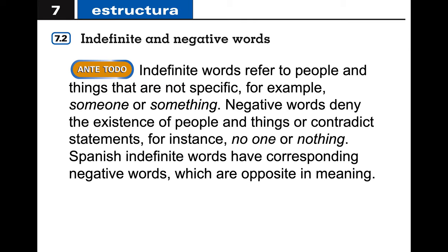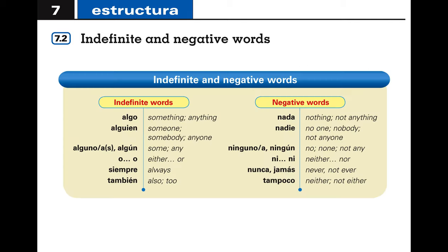Spanish indefinite words have corresponding negative words with opposite meanings. So for indefinite words like 'something,' 'someone,' 'some,' 'either,' 'always' — I wouldn't say 'no algo'; I would say 'nada' for 'nothing.' In English, 'something' and 'nothing' share the word 'thing,' but in Spanish we are completely changing the formation of the word.